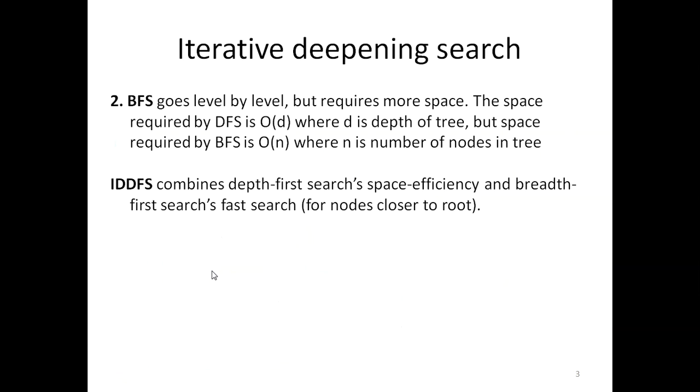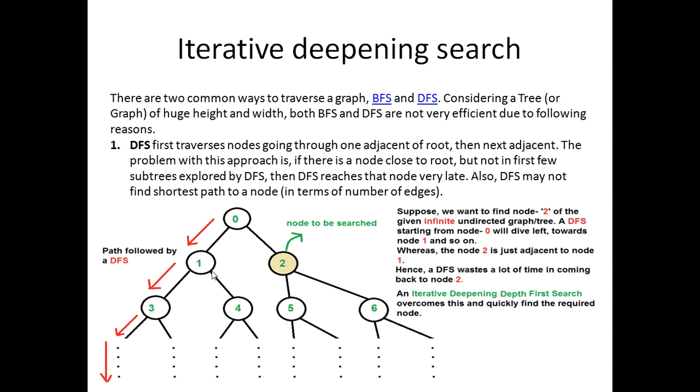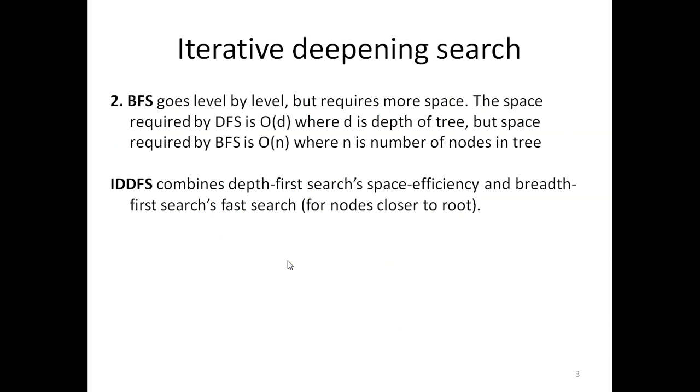If we talk about breadth-first search, BFS goes level by level but requires more space. We will find node two in the second iteration. But specifically if we talk about space, time is very less in this case, but in comparison to depth-first search, its space requirement is very high.